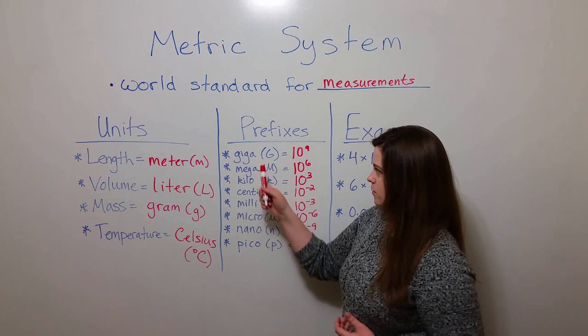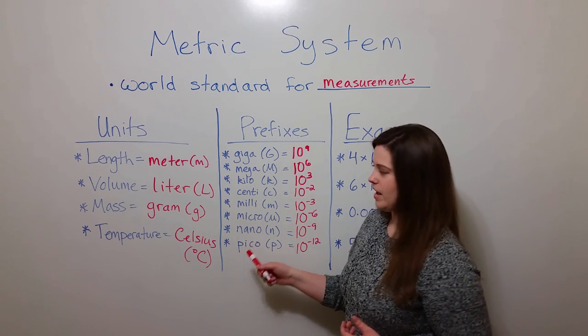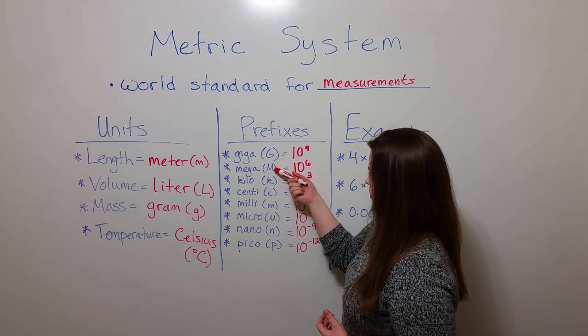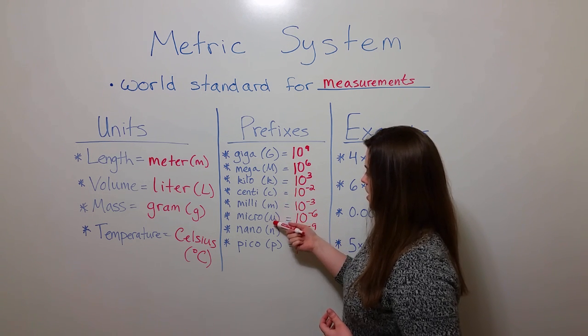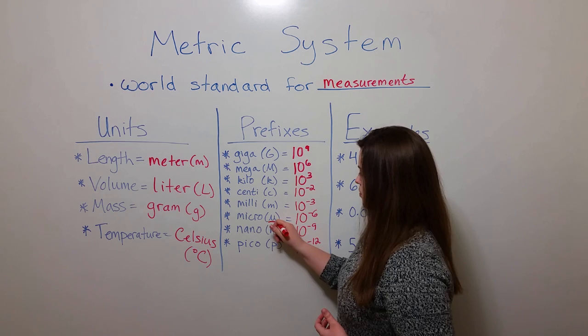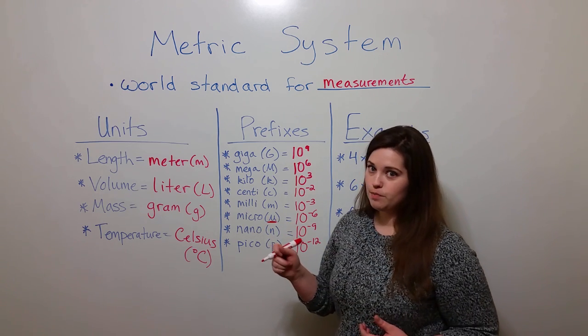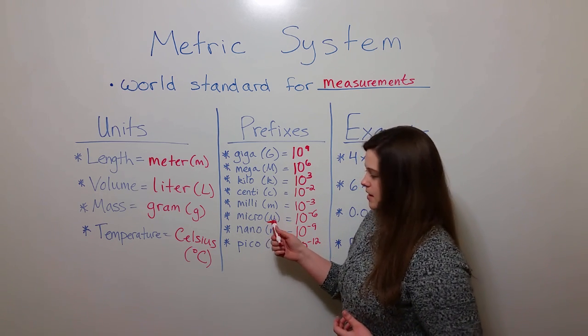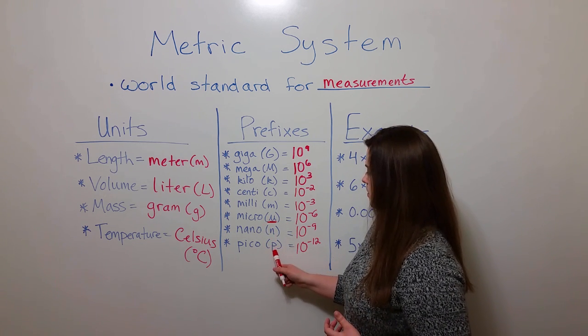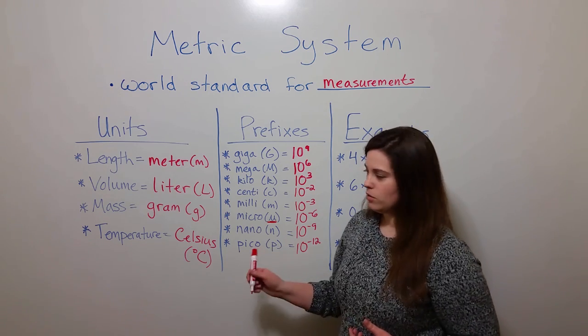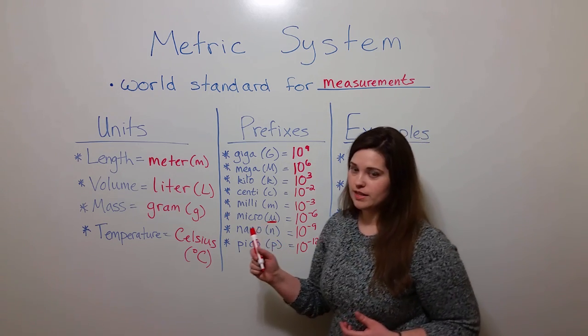Also note that each of these prefixes have abbreviations. Capital G, capital M, lowercase k, lowercase c, lowercase m. Here, for micro, the abbreviation is the Greek letter mu. You can also see MC used as the abbreviation for micro. And then lowercase n and lowercase p, rounding it out for the nano and pico prefixes.